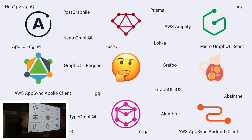We also have URQL, and Neo4j GraphQL which supports integration with Neo4j and exposes data through GraphQL queries and mutations. Apollo is already a popular stack — we use Apollo client and Apollo server, and we use Apollo server to create a GraphQL server.